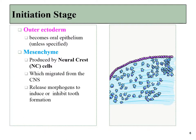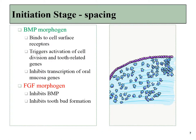Without signals from neural crest cells, the outer ectoderm simply becomes plain oral epithelium. Two morphogens important for tooth formation are BMPs and FGFs. BMP, bone morphogen protein, is secreted by neural crest cells, binding to oral epithelial cells' surface receptors and activating cell division and differentiation to form tooth placodes. FGFs, fibroblast growth factor, inhibit BMP production, thereby inhibiting tooth bud formation and ensuring even spacing between teeth.